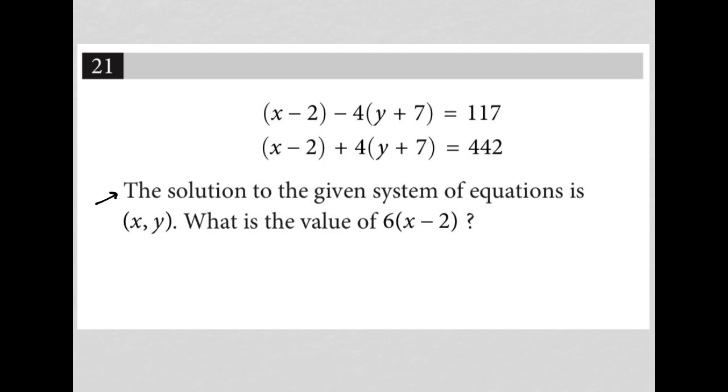I think that if I were to add these two equations together, first of all, I get this middle, this term to cross out, a negative 4 times y plus 7 will cross out with a positive 4 times y plus 7.